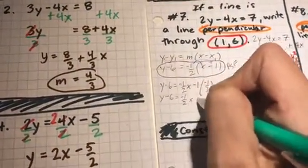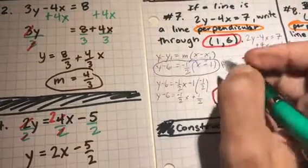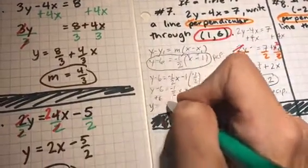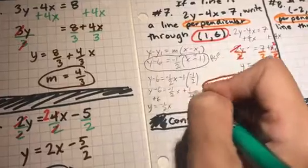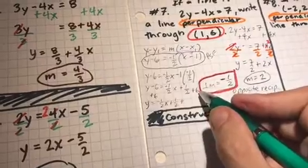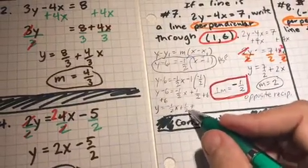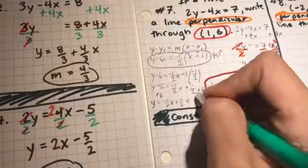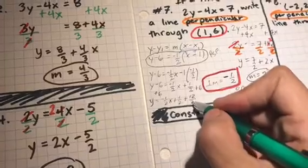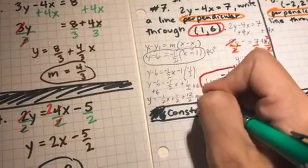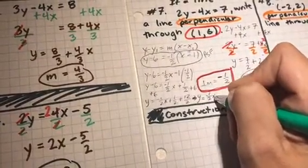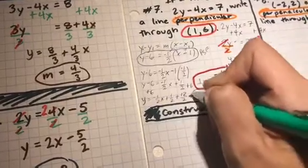Y minus 6, negative 1 half x plus 1 half. Now I still need to add 6 to both sides to get y by himself. So I get y is equal to negative 1 half x, and I have 1 half plus a 6. Well, I need 2 in the denominator so that I can combine these two terms that are alike. 6 could be rewritten 12 halves because 12 divided by 2 is 6. Now let's rewrite this for our final answer: y is equal to negative 1 half x plus 13 halves. Awesome job.